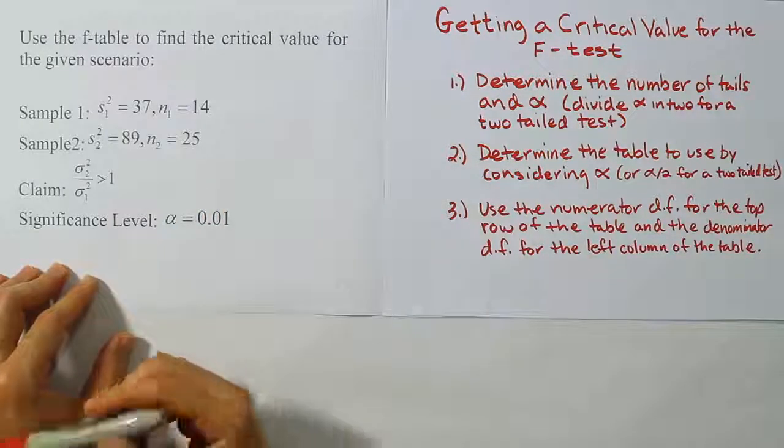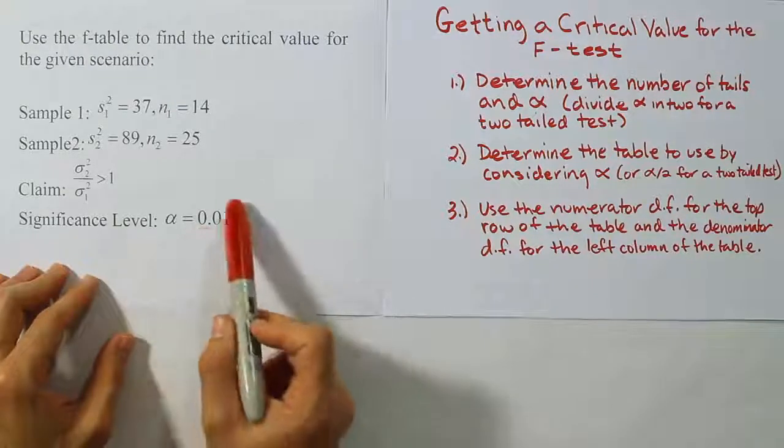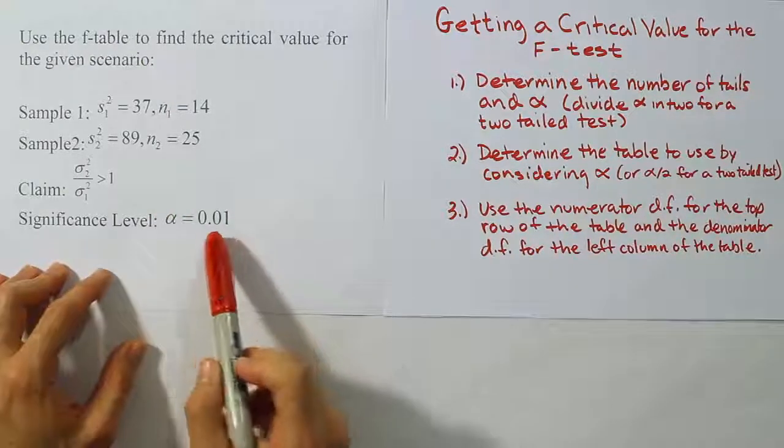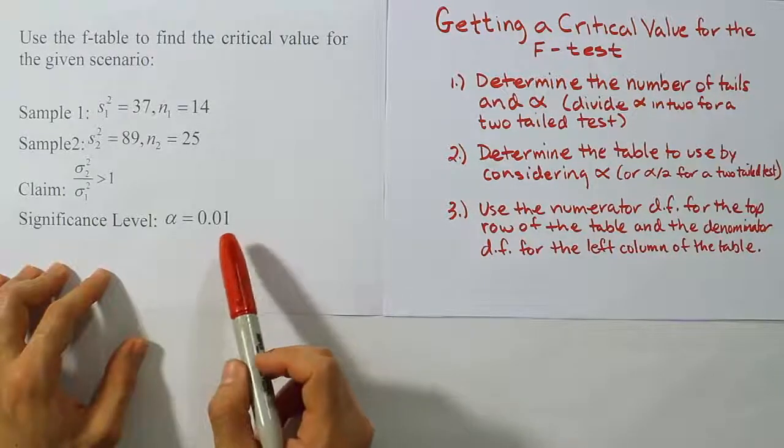So now we come to step two, and it says determine the table to use by considering alpha from step one. So the tables are actually, we have a separate table for every alpha. So if we know our alpha is 0.01, then we're going to go to the 0.01 table.